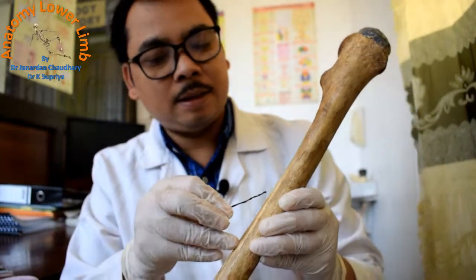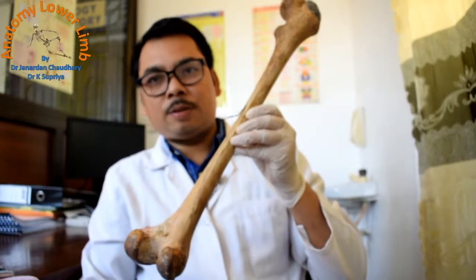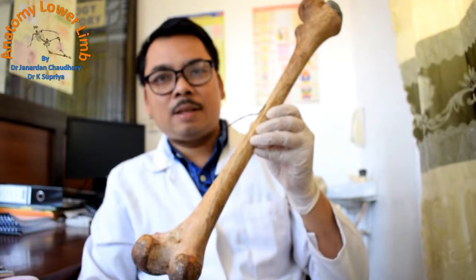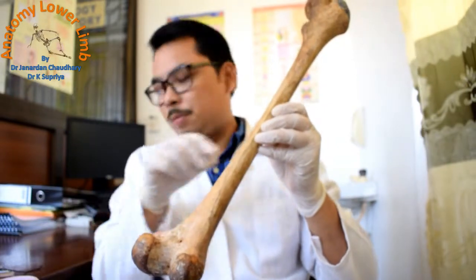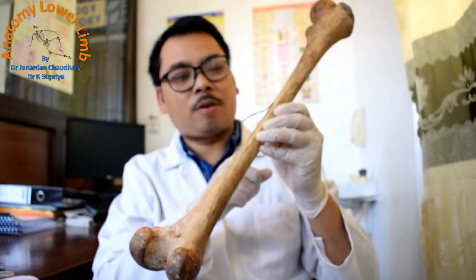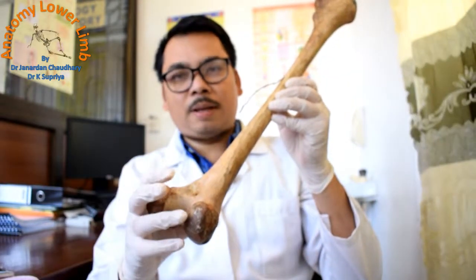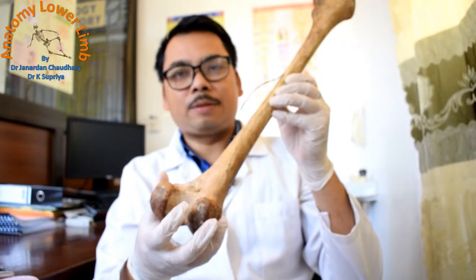where we can see the direction is towards the upper end, which correlates with the principle of the nutrient foramen and growing end. This means the lower end is the growing end of the femur. This is the characteristic feature of the femur — the growing end of the bone.